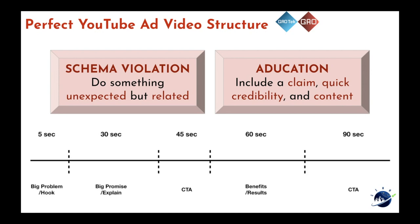From there, we go into a 30-second big promise or explanation — as we saw with LeBron and Nike talking about athlete resilience — and then another call to action, something like 'go to the Nike store and buy our products.' After that, we go into about a 60-second period of really narrowing down why our brand is different and the benefits and results we've achieved — social proof, credentials, certifications, numbers, and stories. Then we're closing at around 90 seconds with another call to action very similar to the one at 30 seconds, but we're also creating a sense of urgency.